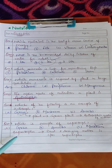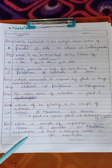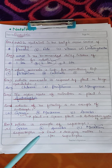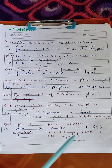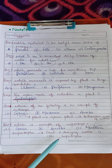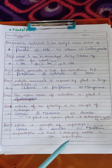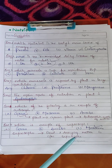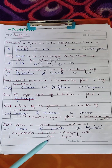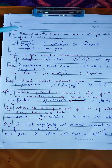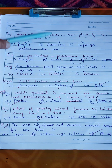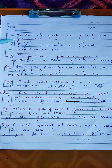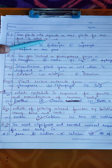Question seven: which is an example of saprotroph? Options: grass, amoeba, mushroom. The answer is mushroom. Mushroom is a saprotroph because it feeds on dead and decaying matter — that is why we call it a saprotroph.